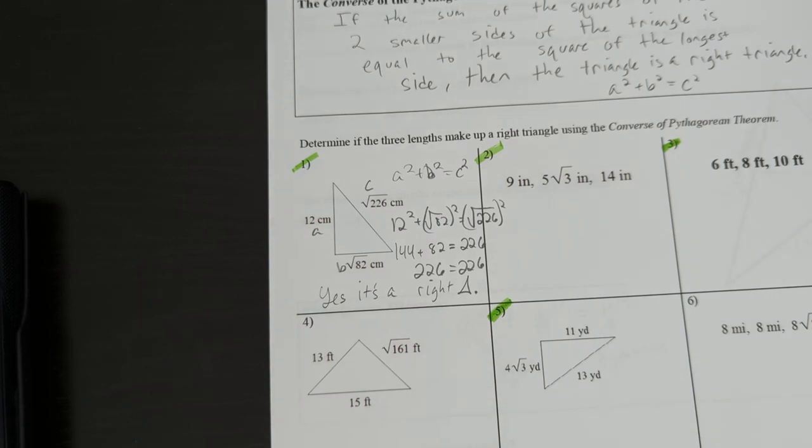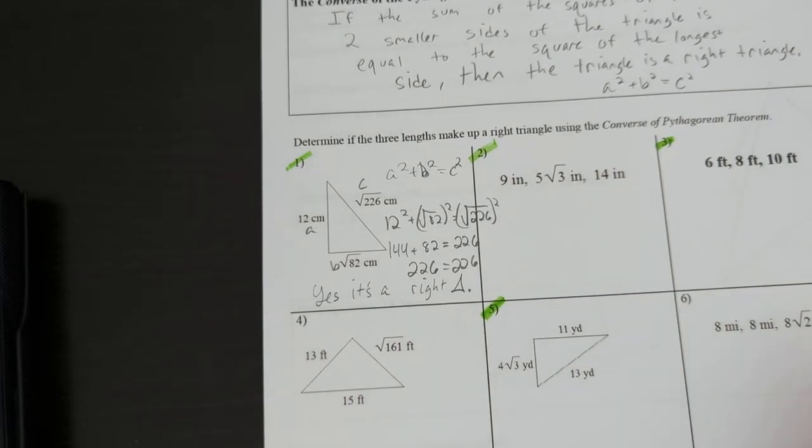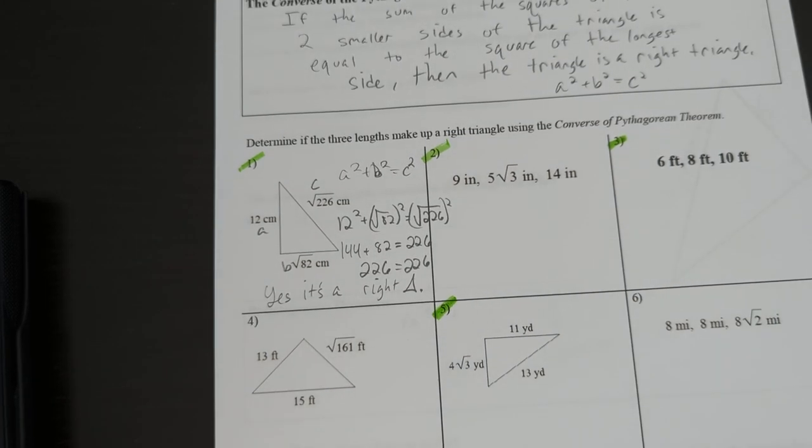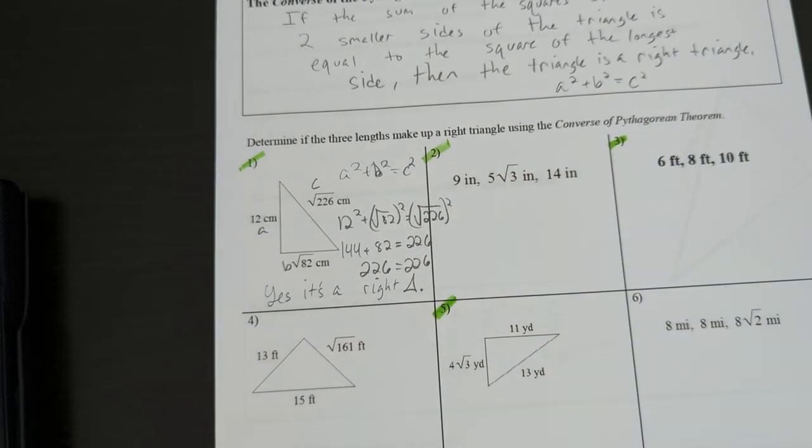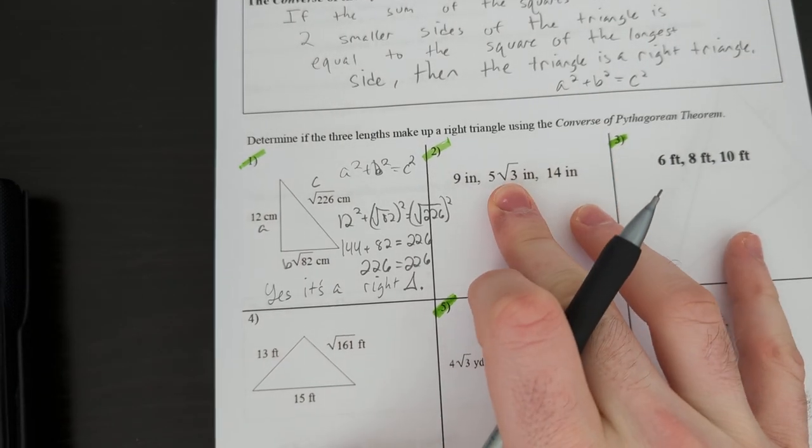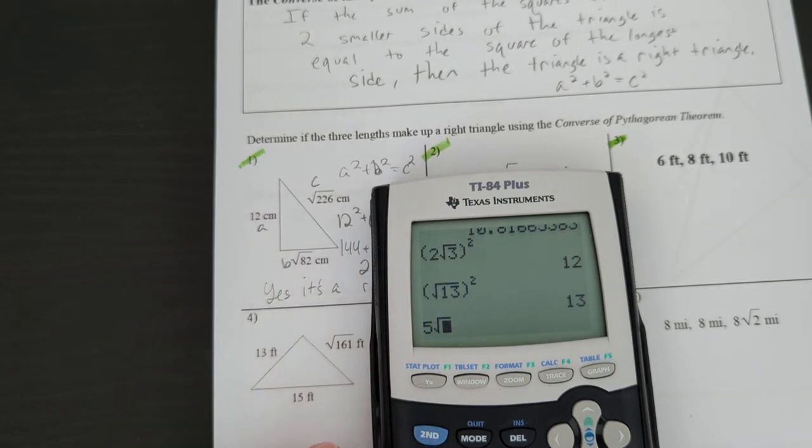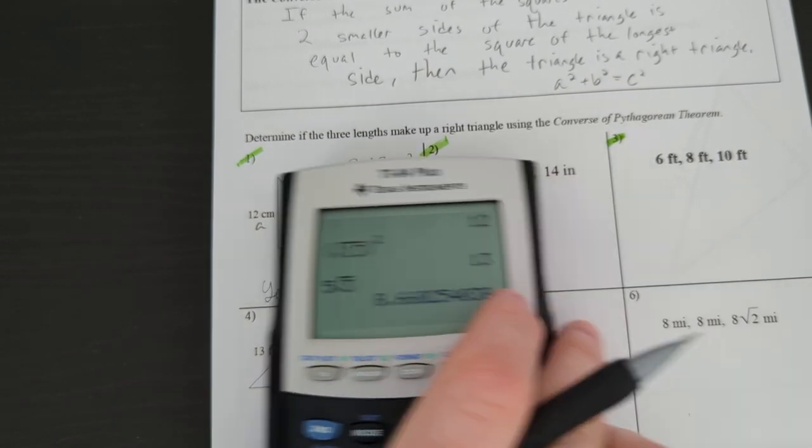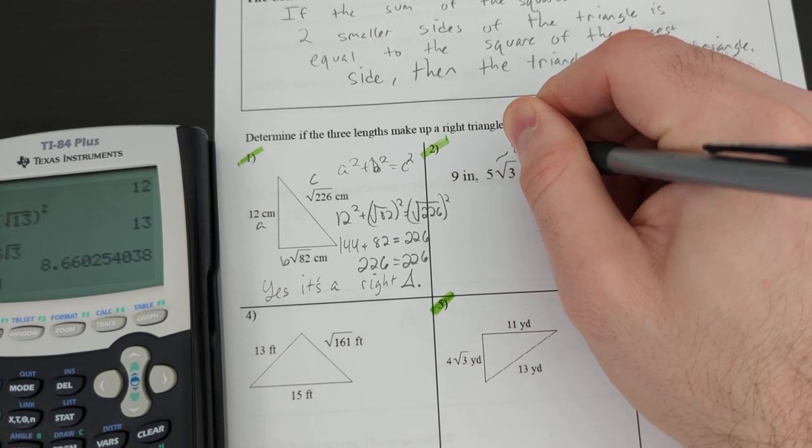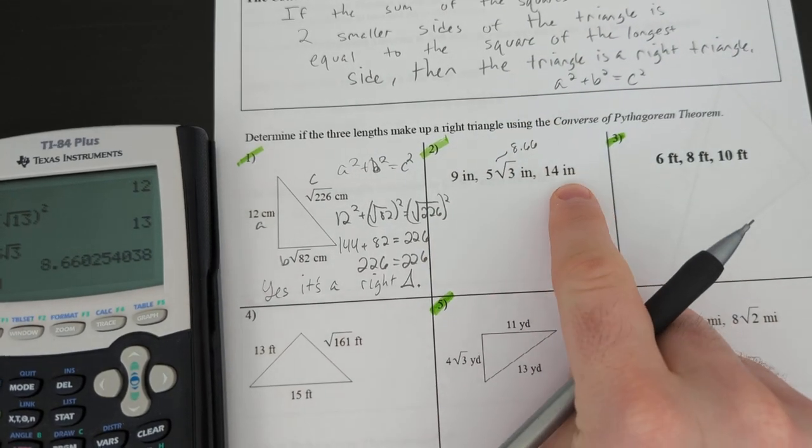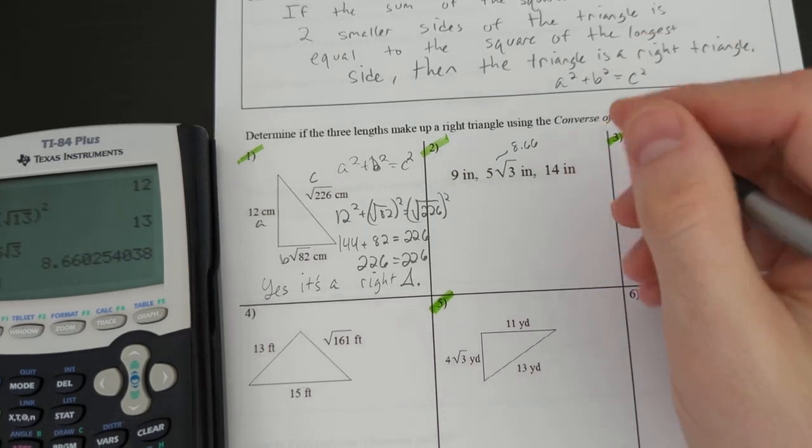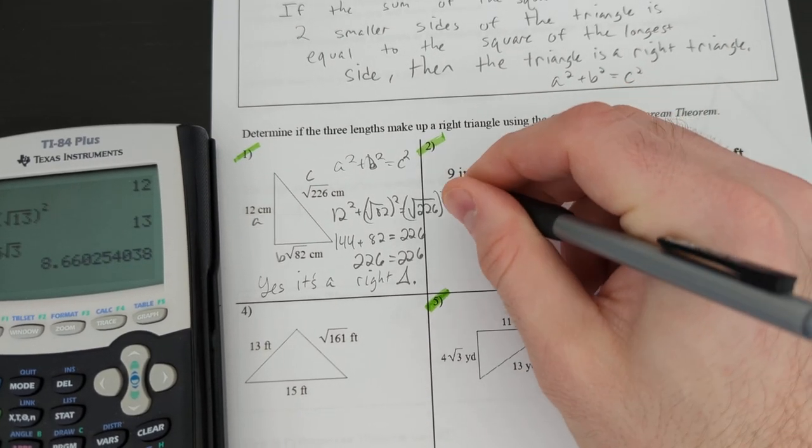That's all you have to do. Determine if the two sides are equal. If they are, you say yes, it's a right triangle. If the two sides are not equal, you say no, it's not a right triangle. That's all you have to do for these problems. Number two. They don't give you a picture. How do you know which one's the biggest side length? I got 9 and 14. I can tell which ones are bigger out of those two. But what number is that? Well, do a quick calculation. What is 5 root 3? It's about 8.66. So in ranking these numbers, this would be C because 14 is the biggest. And this could be A and this could be B.